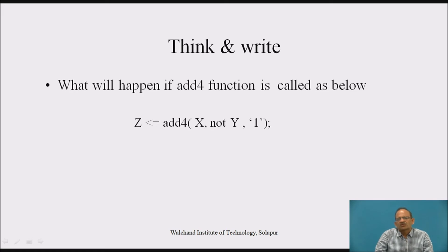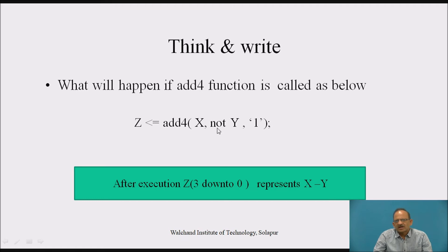Now let us think about what will happen if the add4 function is called as: add4(x, not y, '1'). Because of 'not y', it will complement the second input, giving the 1's complement of Y. Since the input carry is taken as 1, adding the 1's complement plus 1 gives the 2's complement. So adding the 2's complement to X means this function is now implementing subtraction: Z(3 downto 0) represents X minus Y.